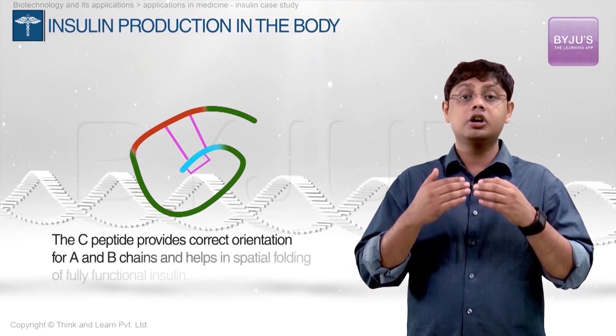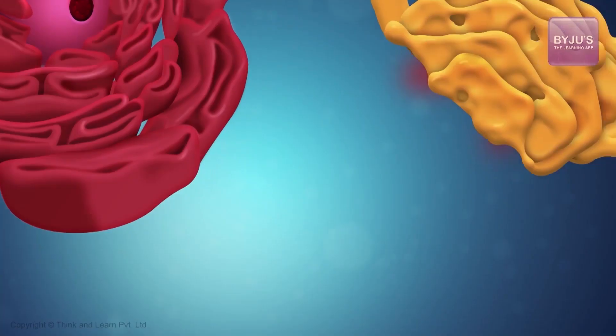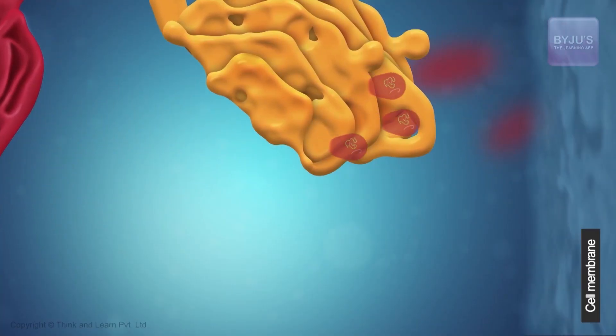a prerequisite for the correct spatial folding of the fully functional insulin. Active insulin and the C peptide are stored in vesicles that are released together upon stimulus signals.